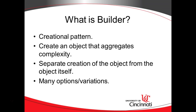Additionally, we want to separate creation of the object from the object itself. In other words, we're trying to create an object of one type, and we have a specific Builder class which knows how to create objects of this type, and more importantly, knows how to apply the variations and the options to this created object.